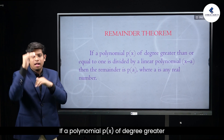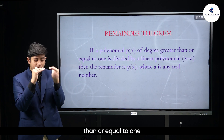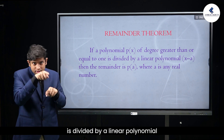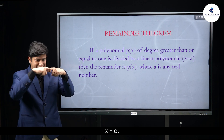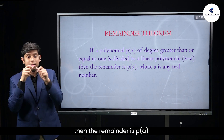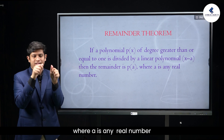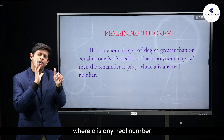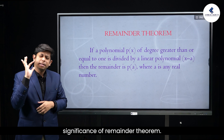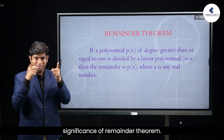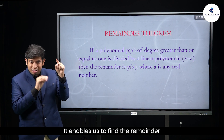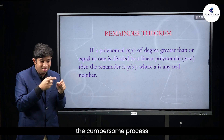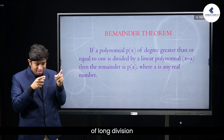Remainder theorem: If a polynomial p(x) of degree greater than or equal to 1 is divided by a linear polynomial x minus a, then the remainder is p(a), where a is any real number. The significance of the remainder theorem is that it enables us to find the remainder without actually following the cumbersome process of long division.